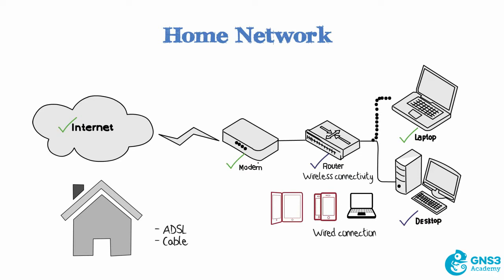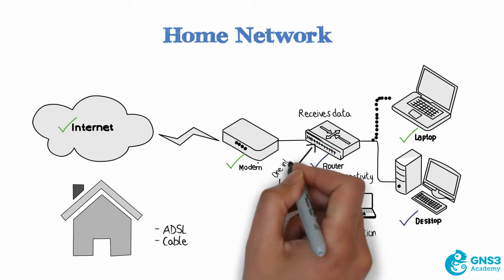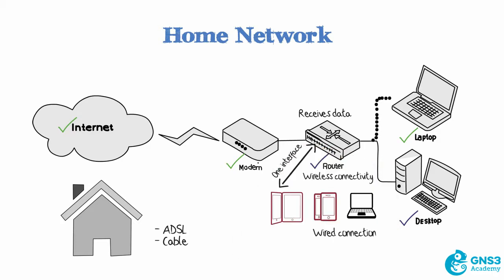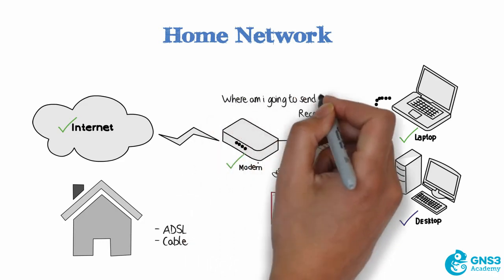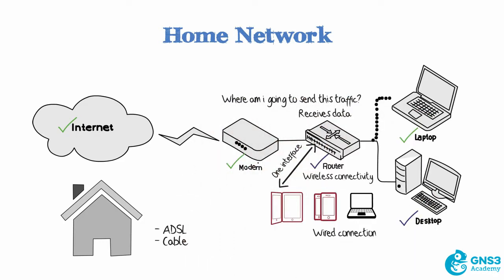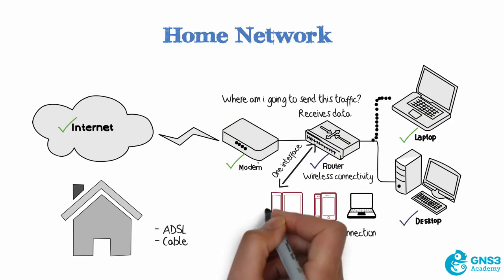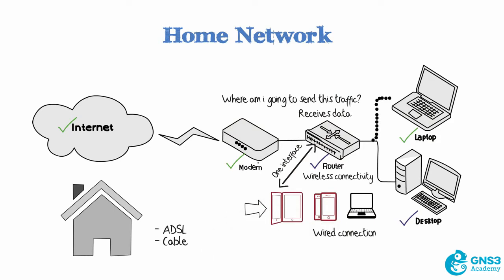In its most simple terms, a router essentially receives data from a PC or an iPad and then determines where to forward it. So it may receive a message from your PC on one interface and then needs to make a decision: where am I going to send this traffic or data? Do I send it onto the wireless network so that it can be sent to the laptop?